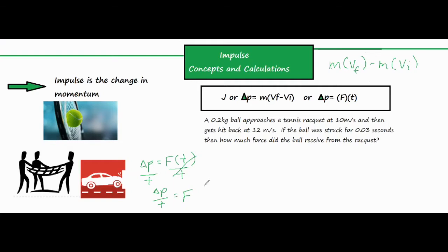If the time of impact goes up, the force decreases, and vice versa — if the time of impact decreases, the force goes up. For example, with a safety net catching someone, their impulse doesn't change because they still have a certain velocity and are brought to rest. But if you give them more time to reach zero velocity, the force decreases dramatically. If a person falls and hits the ground, they're stopped extremely quickly, so the force of impact is much greater.